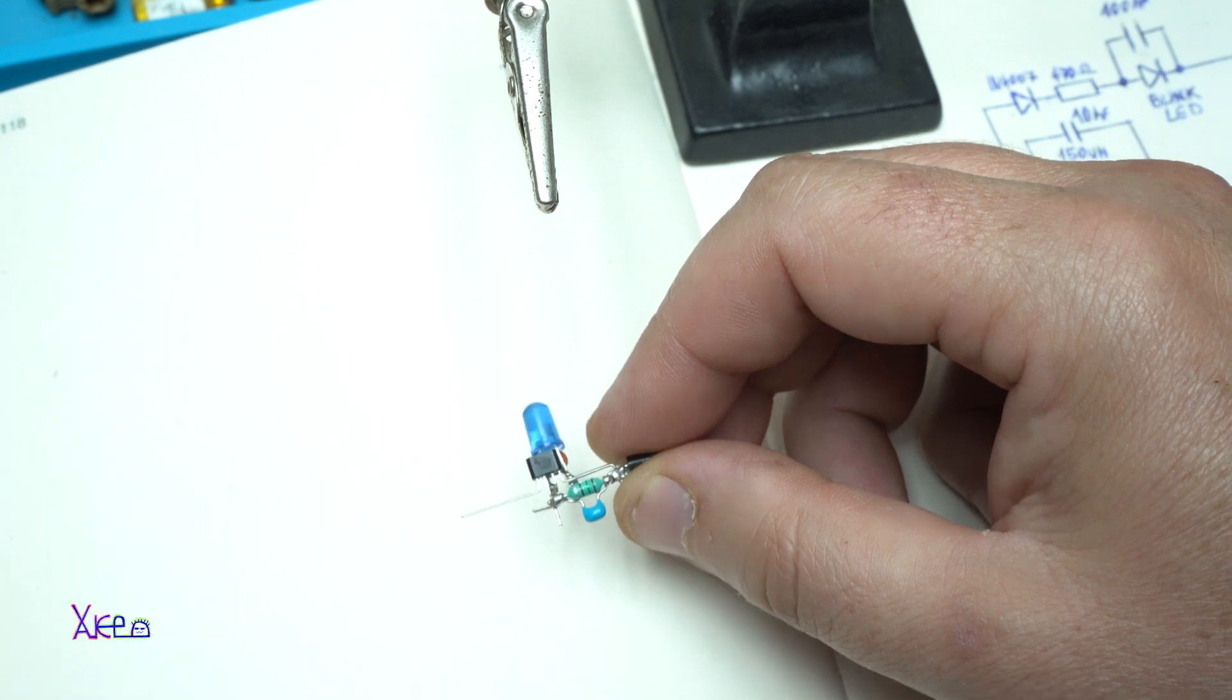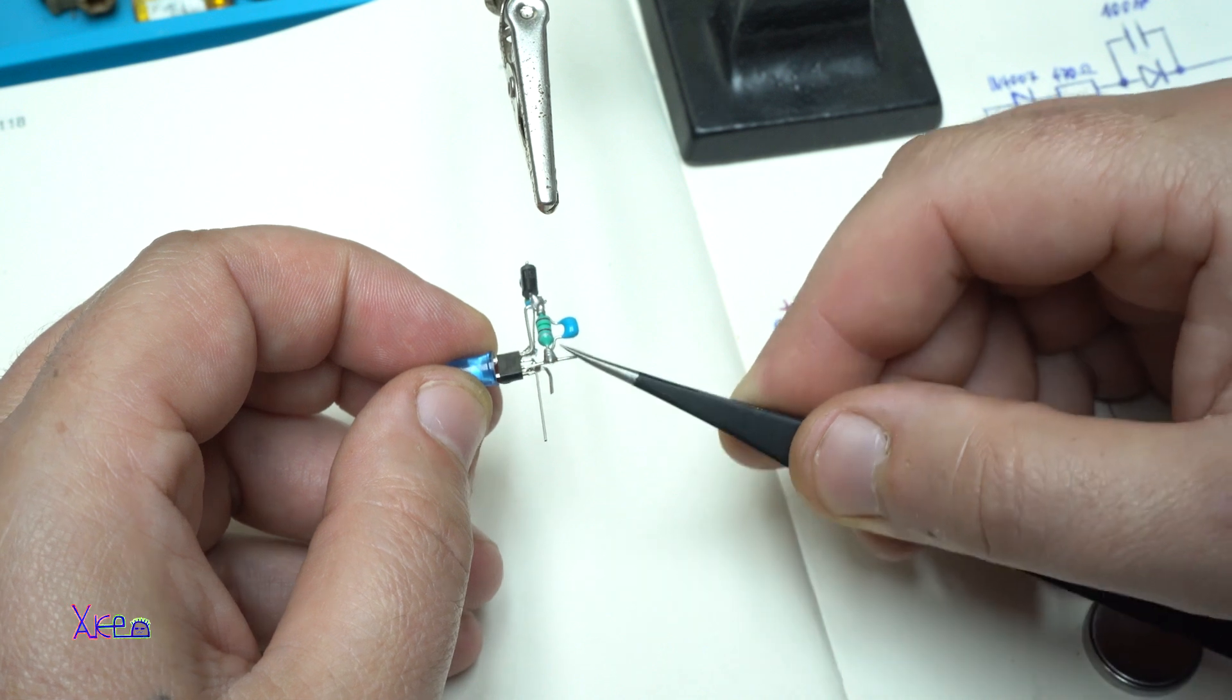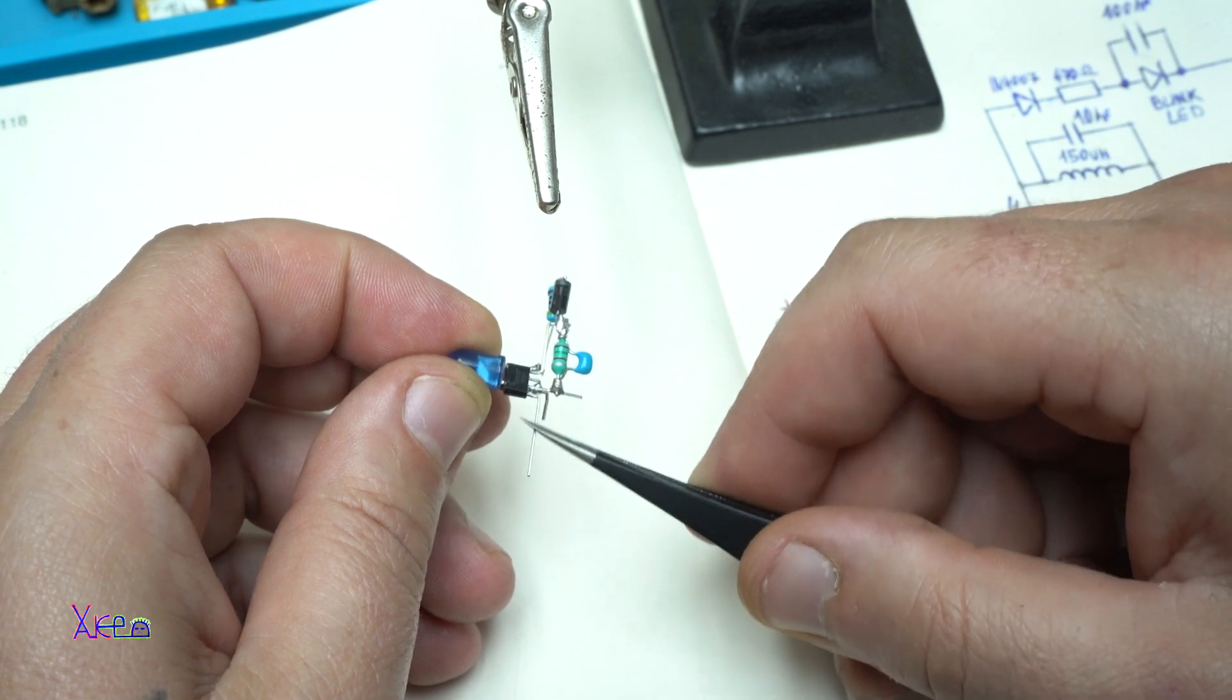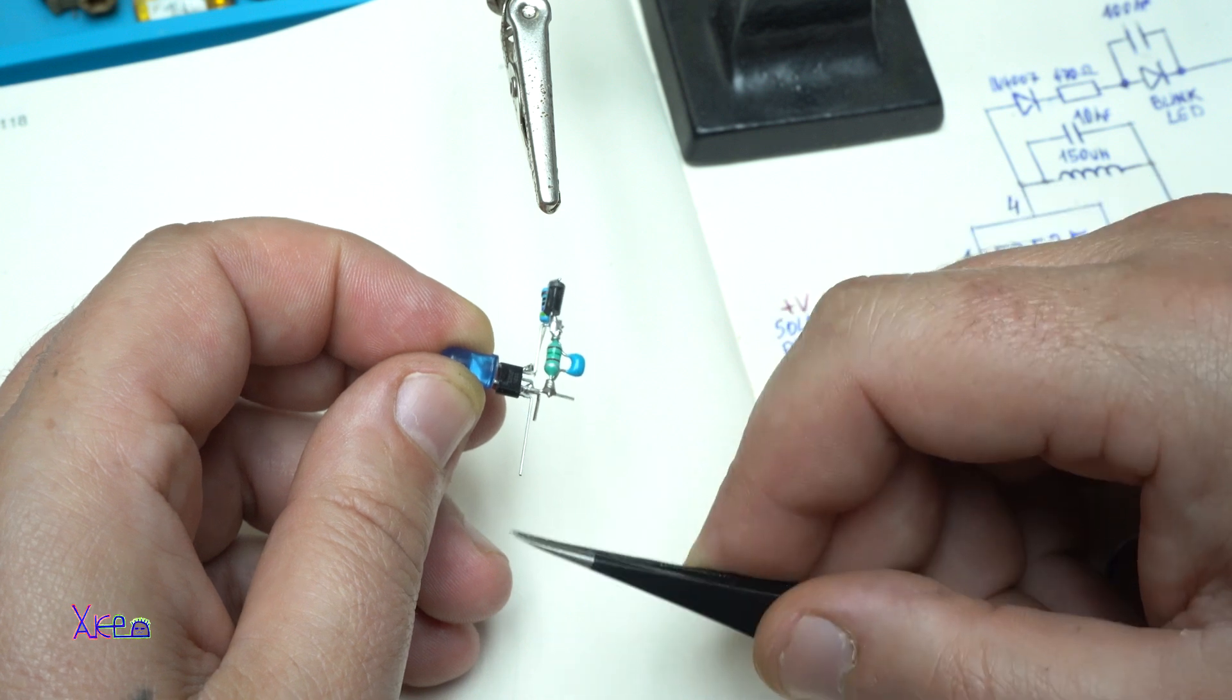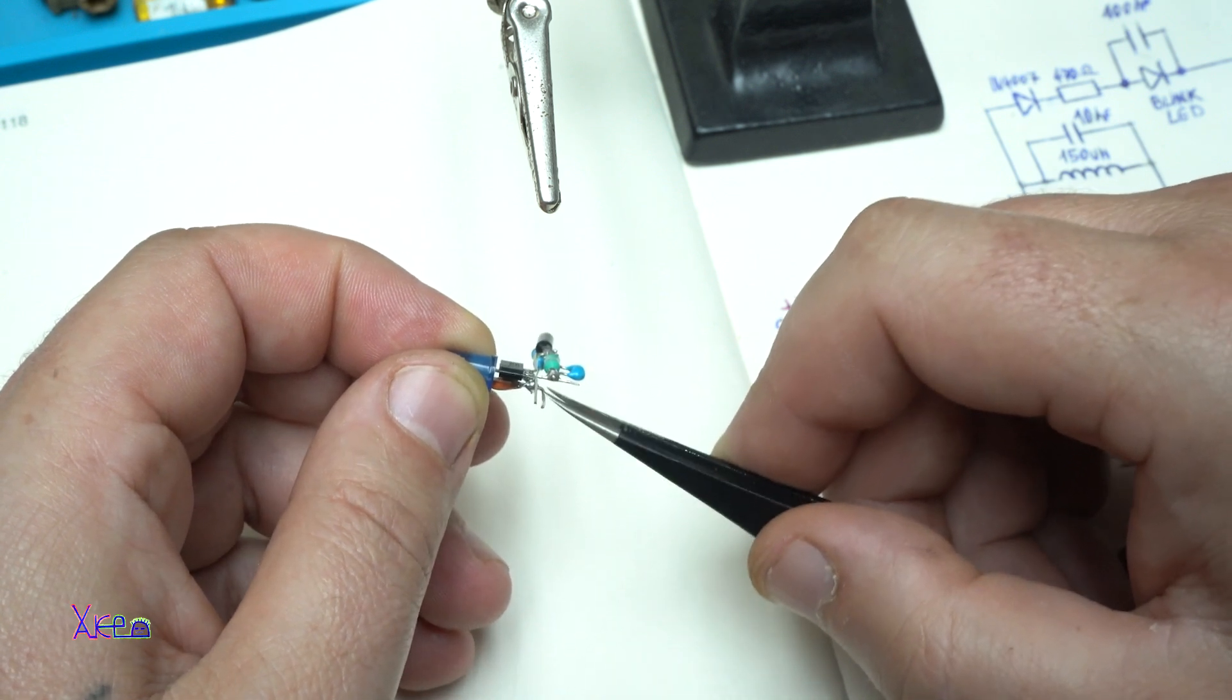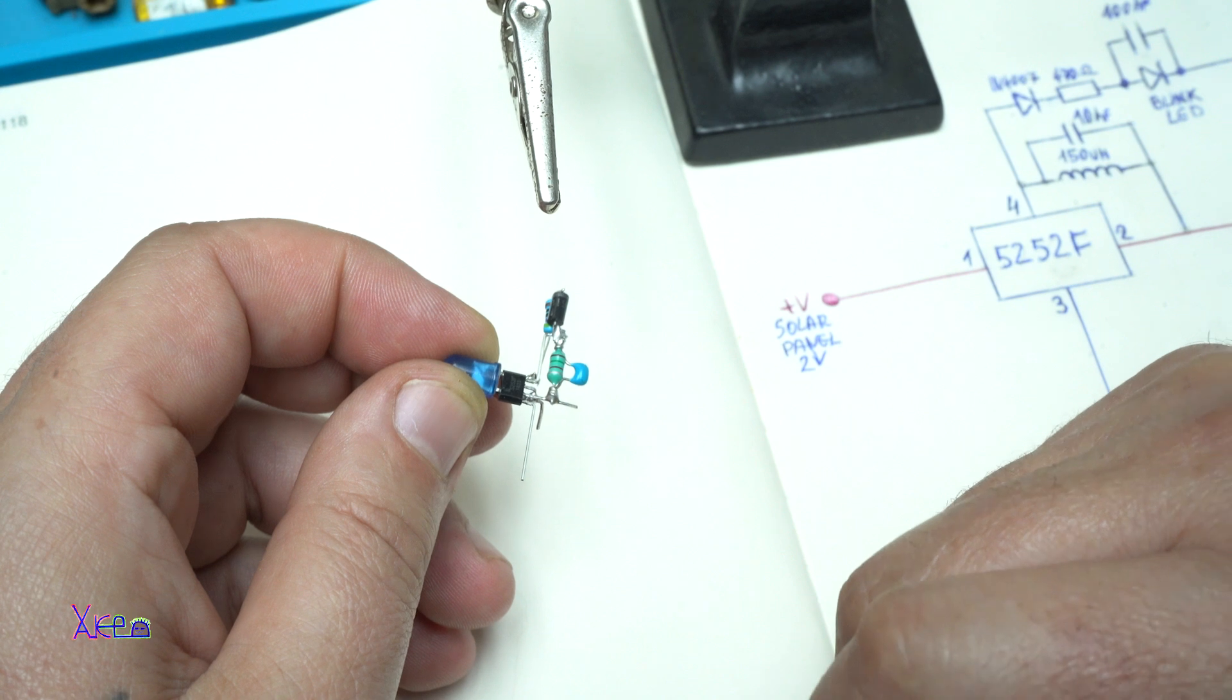Now I'm going to explain the points. We have three points: the first point is the ground, the second point is pin number one of the integrated chip 5252 for the solar panel positive side, and the third point is positive for the battery. On these points I'm going to connect my solar panel and rechargeable battery.